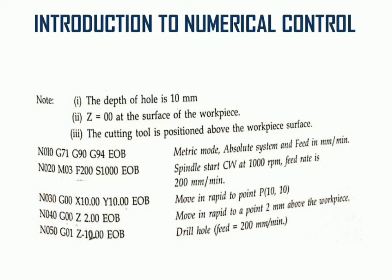We need to keep the tool above the workpiece for 2 mm before taking the feed. So instruction block number 4, N04: rapid traverse G00 and Z2.0 EOB — the tool is kept 2 mm above the workpiece surface.